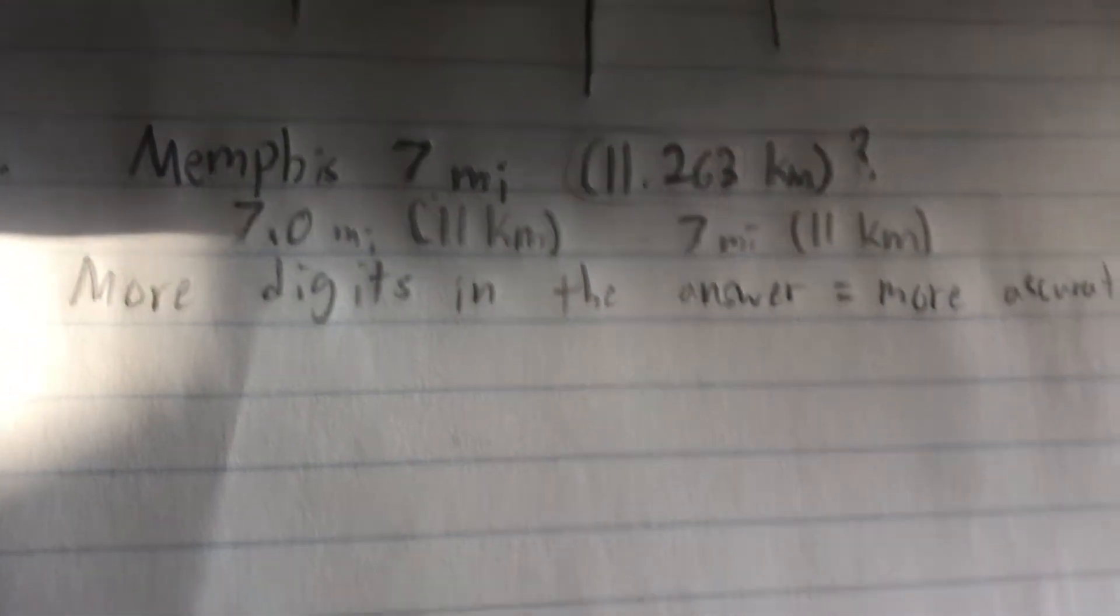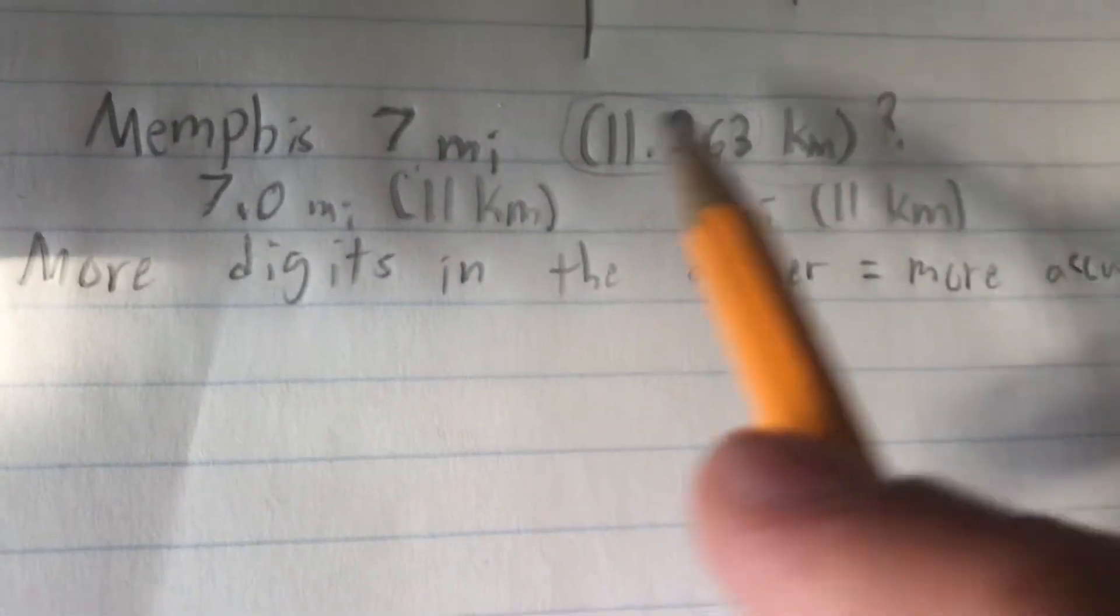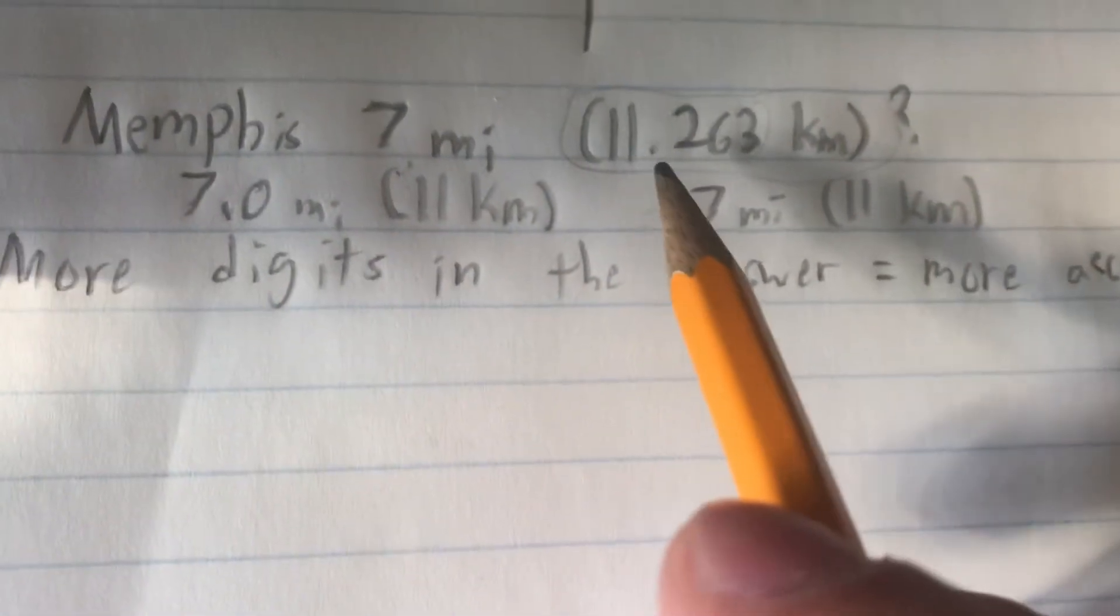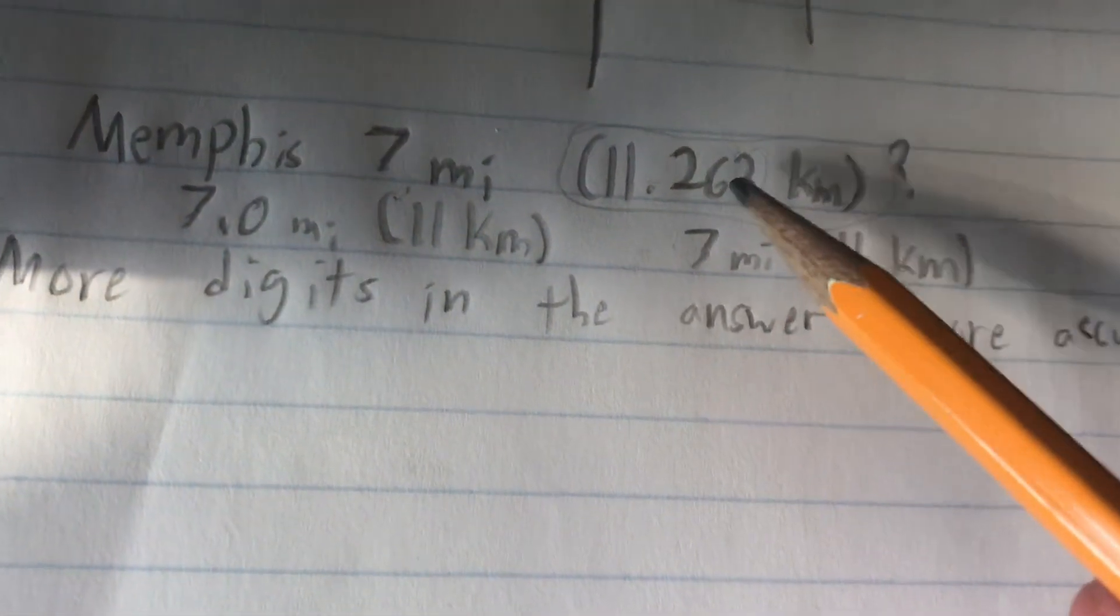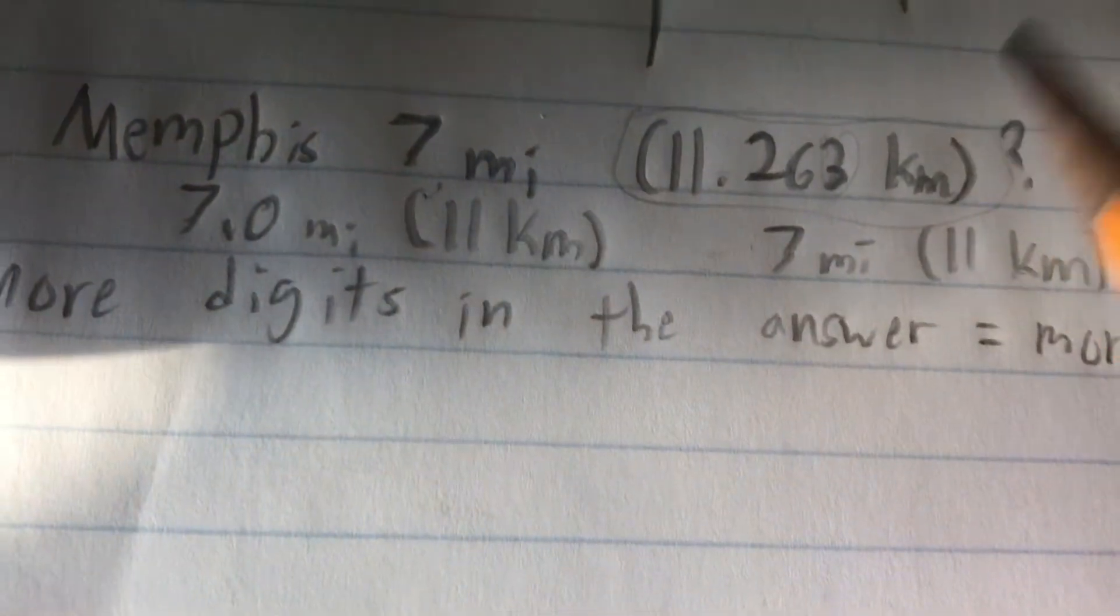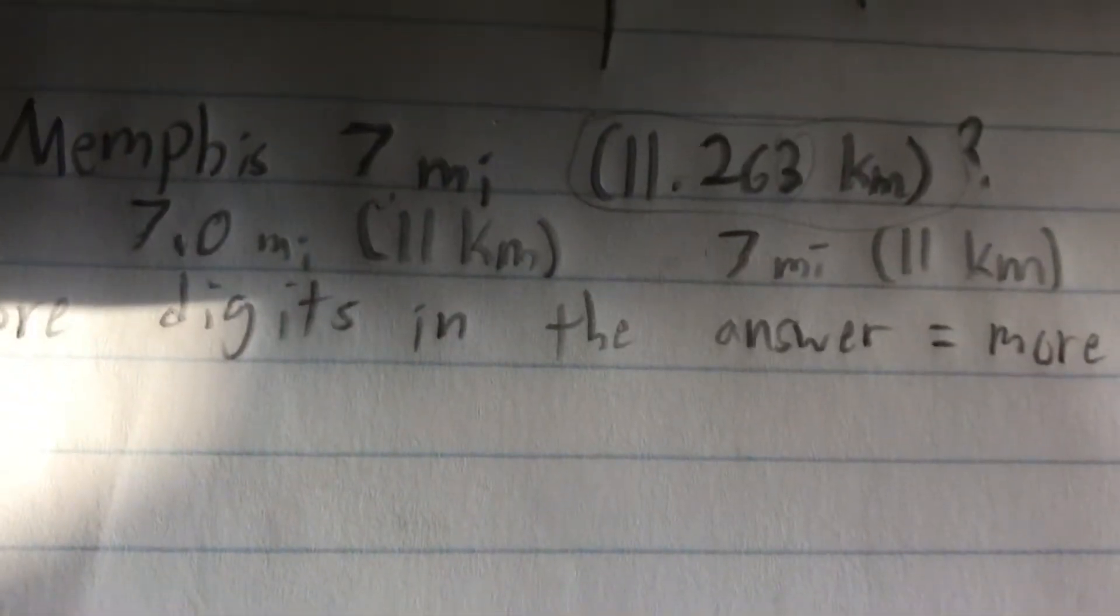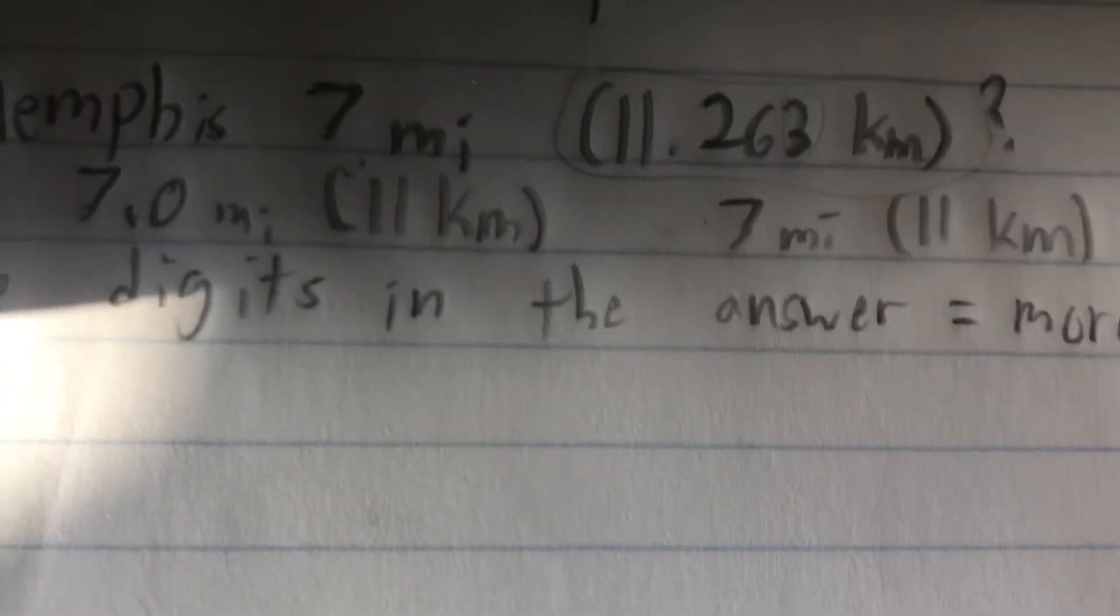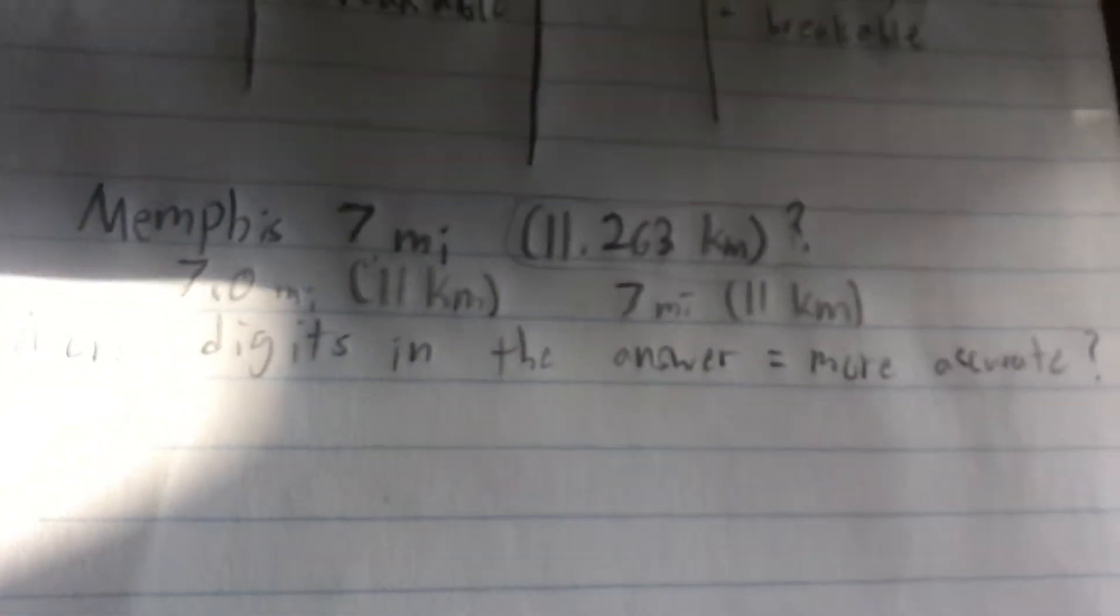So for example, if we were using some really specific measurement tool, and we got some extremely specific decimal point, like 11.263, then it could be said that that measurement was very precise. But if we didn't realize it, but if that measurement tool we were using was broken or something, or was calibrated incorrectly, and was giving us an inaccurate value, then the accuracy is off, no matter how precise the value it's giving us is.